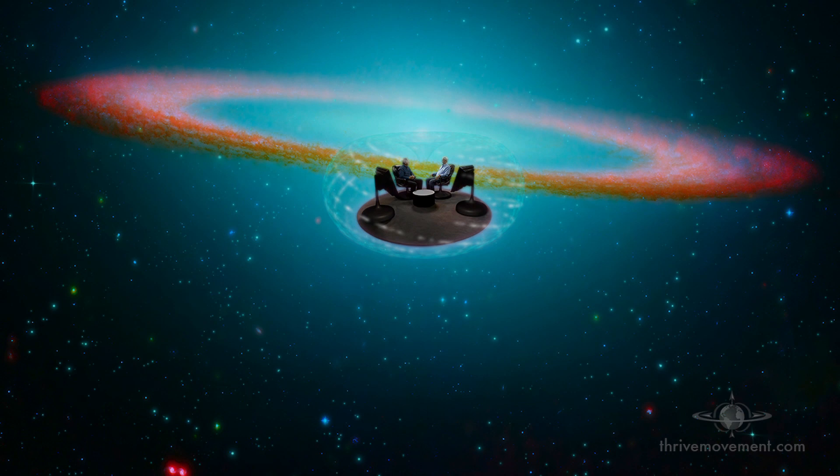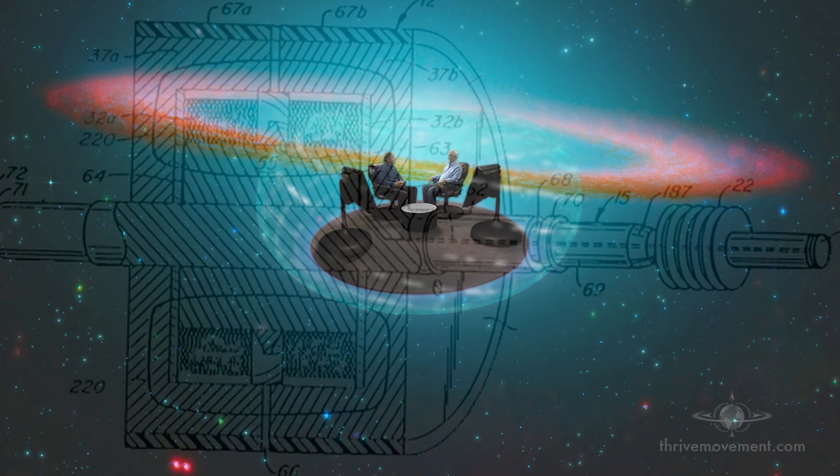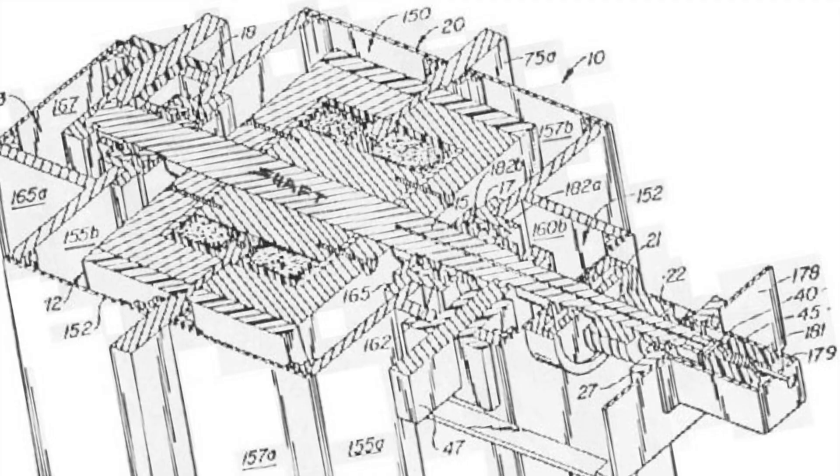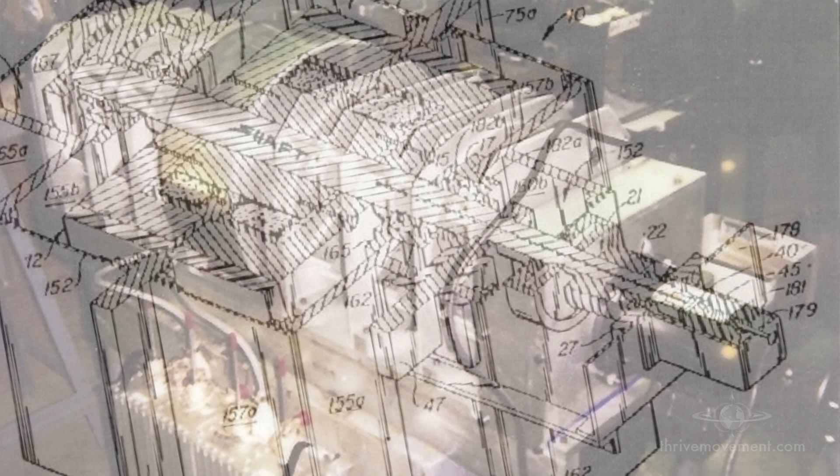A modern-day inventor Adam Trombley was inspired by Tesla's work and by the possibilities of the torus. Trombley built a dynamo, a direct current generator that accessed electrical power right out of the air.